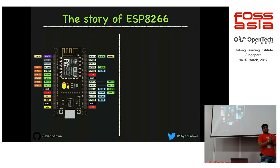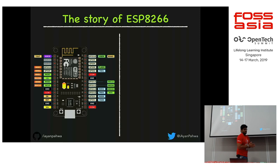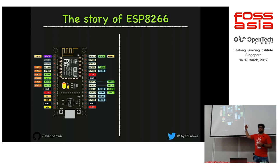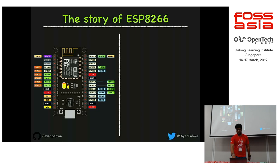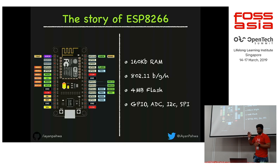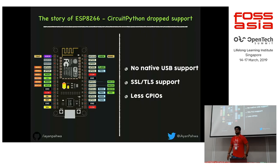A maker's favorite board is the ESP8266 — coined as the cheapest WiFi microcontroller available. Espressif made it, and every project wanted to support it because it was so cheap — around $5 — and IoT was hot when it first came out. MicroPython ran another crowdfunding campaign to support ESP8266. The board has 160KB of RAM, 802.11 BGN WiFi, 4MB flash, GPIOs, ADC, I2C, and SPI. However, CircuitPython eventually dropped support for it.